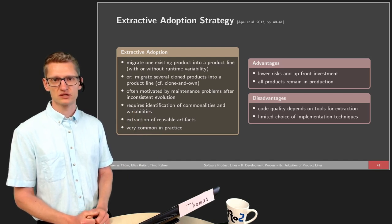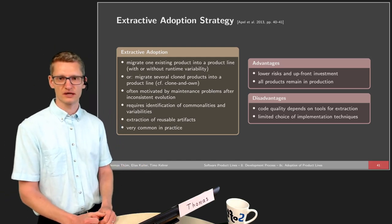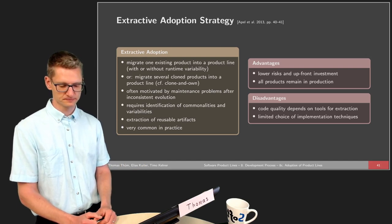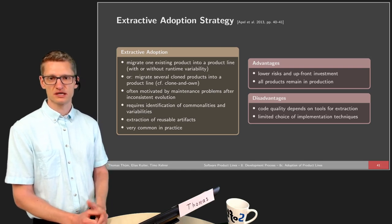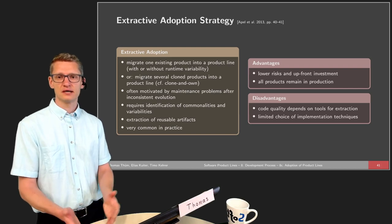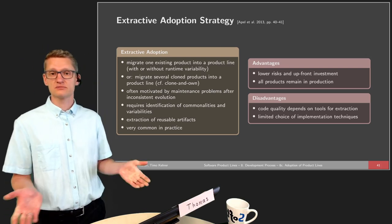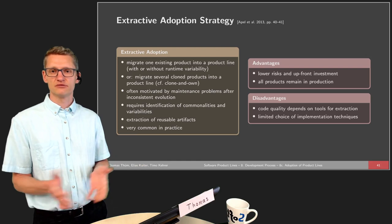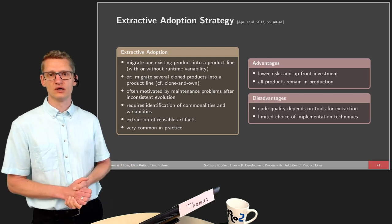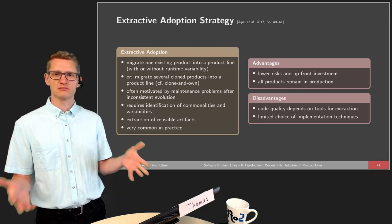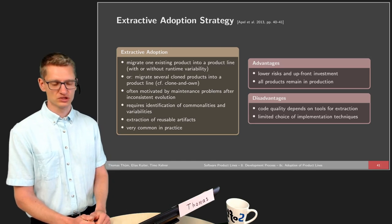If you use the wrong implementation technique — for instance, clone-and-own for hundreds or thousands of products — the software project will not be successful. When we have cloned products, identifying commonalities and variabilities is required. If we only have one existing product, we need to identify and locate the features, which brings up the problem of feature traceability. Feature traceability is typically not given in single-system engineering, and the term 'feature location' refers to techniques and tools that might help, but it is typically a laborious process with limited automation.